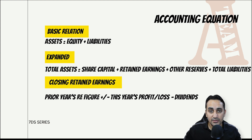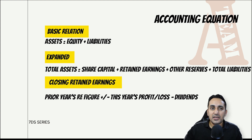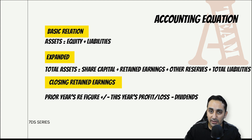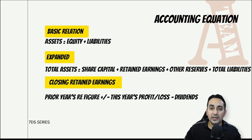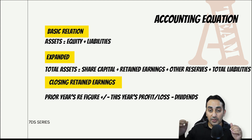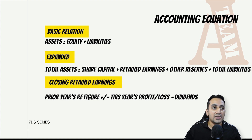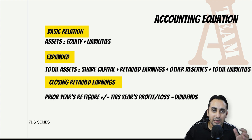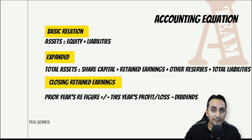यहाँ पर थोड़ा और expand करते हैं - equity के कुछ components भी आ सकते हैं। कहीं बार retained earnings निकालने के लिए बोला जा सकता है। अगर opening balance of retained earnings दे रखा है और closing balance निकालना है तो current year के profit or loss की जानकारी हो सकती है। इसीलिए equity की बजाए share capital, retained earnings, और other reserves जैसे revaluation reserve आ सकते हैं।